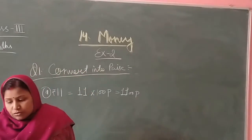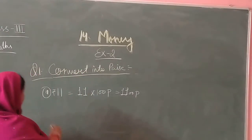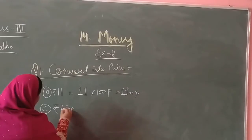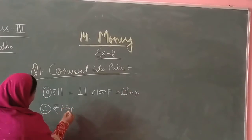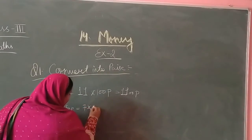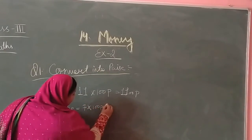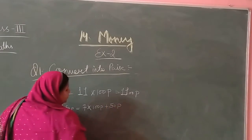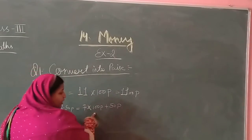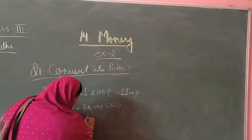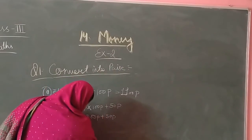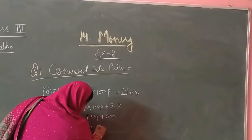For question C, we have 7.50 rupees. So first of all, we do 7 into 100 paisa, plus 50 paisa. That gives us 700 plus 50 paisa, which equals 750 paisa.